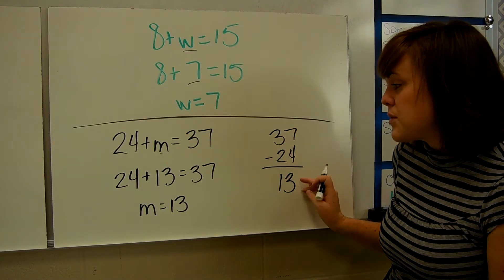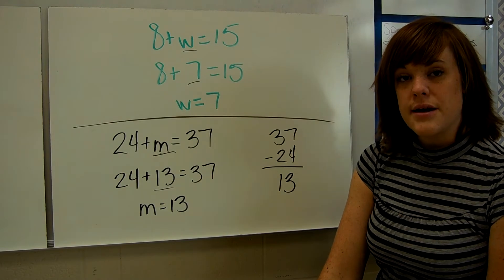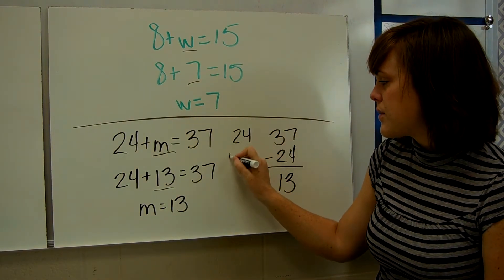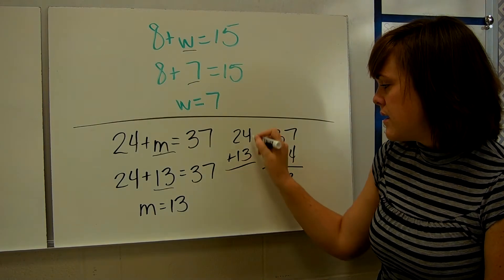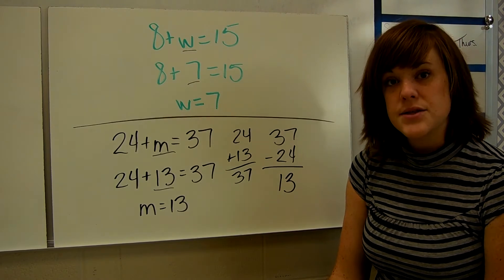So I'm going to take away my 24. I have 13 left, so that has to be the 13 there. And of course, you would check your work. 24 plus 13 actually is 37, so I'm good. M is 13 is my answer.